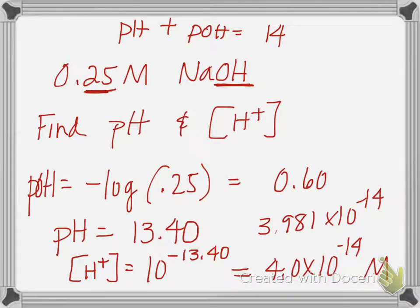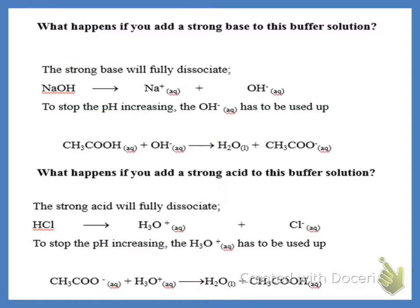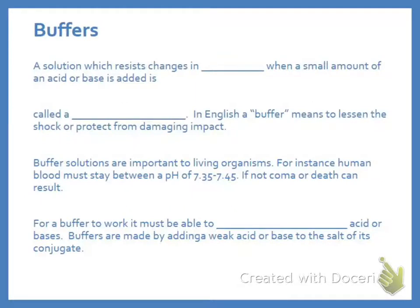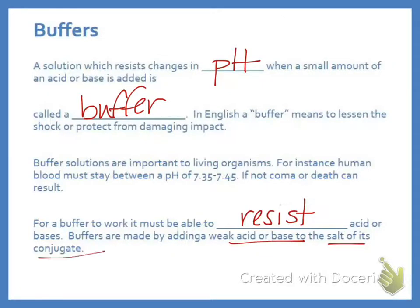Let's move on to buffers. A buffer is something that occurs when you have things that resist a change in pH. We call these things buffers. There are a lot of buffers in your living systems. In English, the word just means to lessen the shock or protect from damaging impact. In chemistry, it means it resists the changes from an acid or base. For a buffer to work, it must be able to resist an acid or a base. In other words, the change in pH won't be as drastic. It happens when you have a weak acid or base added to the salt of its conjugate.